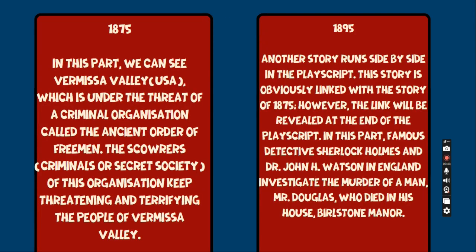1875: In this part, we can see Vermissa Valley, USA, which is under the threat of a criminal organization called the Ancient Order of Free Men. The scourers — criminals or secret society of this organization — keep threatening and terrifying the people of Vermissa Valley.